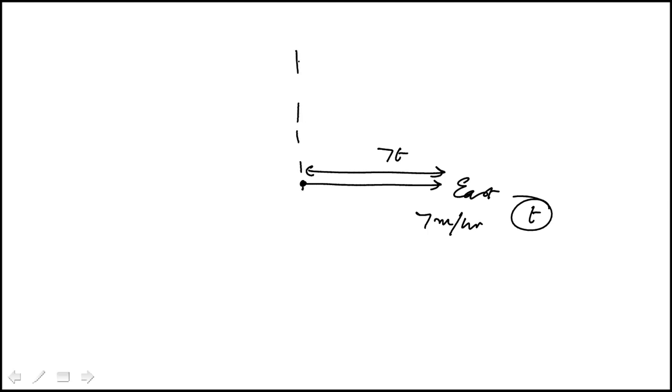The other person is running 30 degrees west of north, which means if this is north, they're going 30 degrees towards the west. They're running at 6.5 miles per hour, which means after time t, they've covered 6.5t.